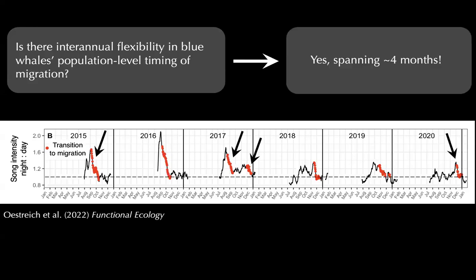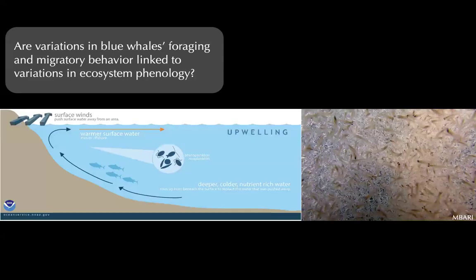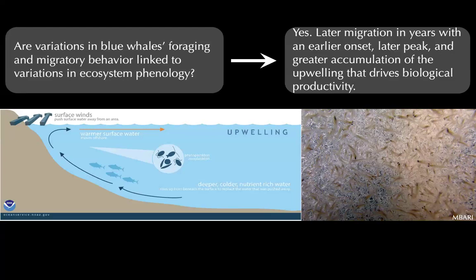The answer is that there's incredible variation — as much as four months out of the 12-month annual cycle. We then conducted phenological analyses of upwelling timing and intensity and found that blue whales were migrating later in years that had an earlier onset, a later peak, and a greater total accumulation of upwelling intensity.